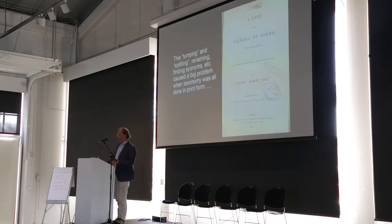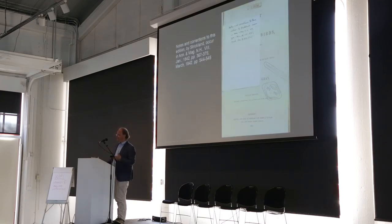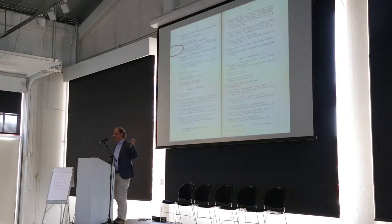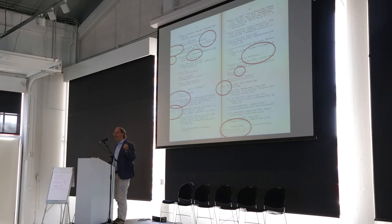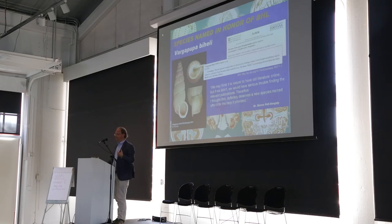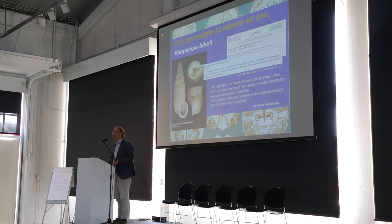Here's the lumping and splitting — an example of one of the books in BHL. We have an annotation in the printed form, and the author is going through and annotating and changing all of those things over the course of time. But how can we do that today, and how can we capture those things from the past? As a quick aside, I do hope that one particular species, Varagopupa beheli, doesn't get its name changed, because it was named after BHL by one of our researchers who was so pleased with our services.